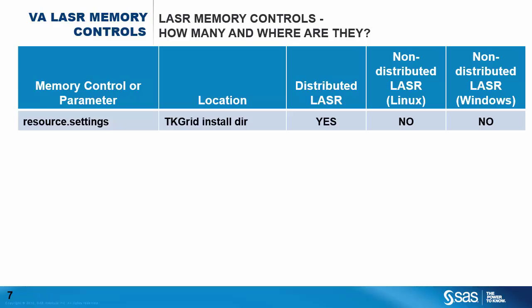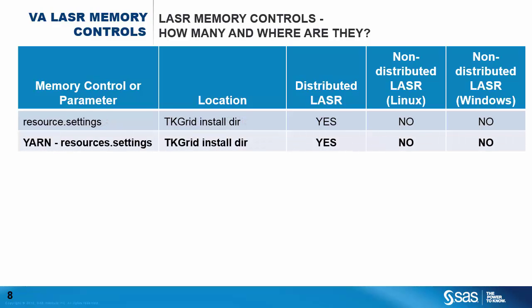The first control is a set of variables found within the resource.settings file of a distributed-only deployment. This file is located in the root directory of the TK grid installation. The second control is related to the first — the same resource.settings file can also be used to integrate memory controls with YARN, and this too is only available for distributed deployments.